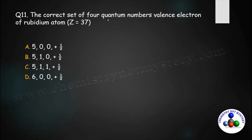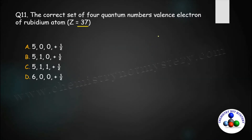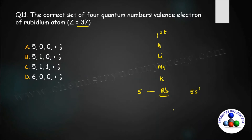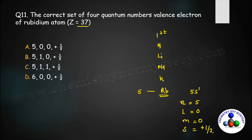Next question: the correct set of 4 quantum numbers for the valence electron of rubidium. Rubidium (atomic number 37) belongs to group 1, fifth period, so its outermost configuration is 5s¹. The quantum numbers are: n=5, l=0 (s subshell), m=0, and s=+½ (unpaired electron). So option A is the right answer.